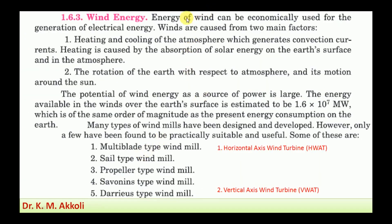Wind energy basics: wind can be economically used for generation of electrical energy. Wind is caused by two main factors. The first is heating and cooling of the atmosphere, which generates convection currents. Heating is caused by absorption of solar energy on the earth's surface; this changes air density from region to region, driving wind flow. The second reason is the rotation of the earth with respect to the atmosphere and its motion around the sun, which also creates wind currents.